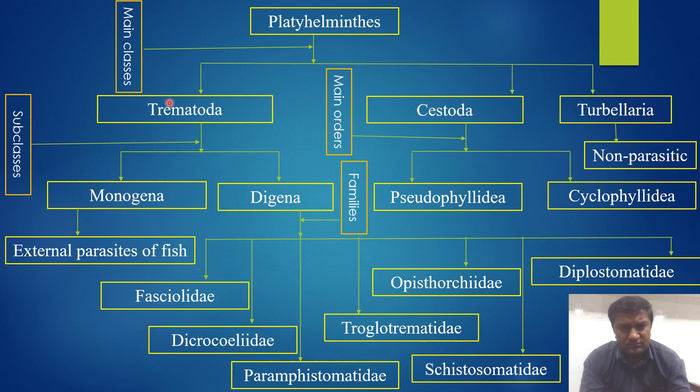Trematoda is divided into two main subclasses: one is Monogenea and the other is Digenea. Monogenea includes only the external parasites of fish, while Digenea is divided into seven families: number one is Fasciolidae, Dicrocoeliidae,